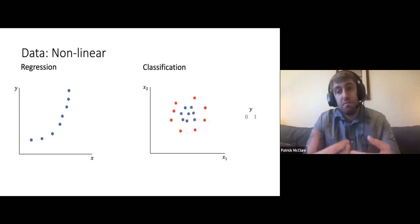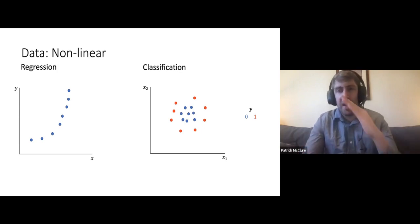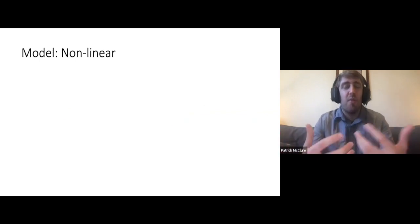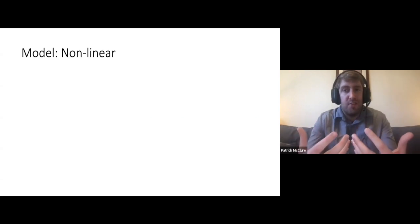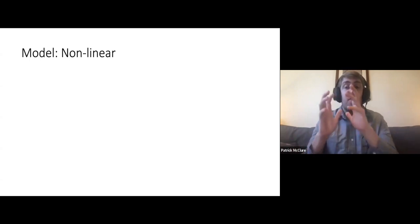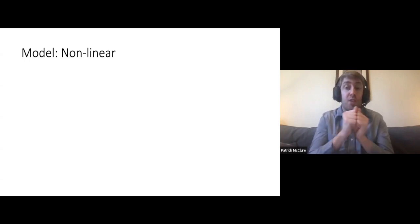We can also encounter issues when we try to do classification, because here it doesn't look like we can ever find a line that will allow us to separate the blue points from the red points. So how do we do this? One way is to find a nonlinear transformation of X, and then use that nonlinear transformation as input to a linear model.